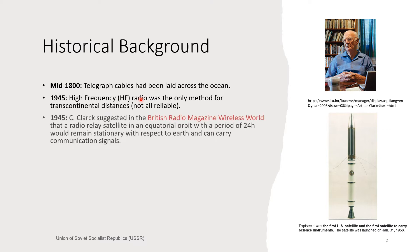Also in 1945, a writer called Arthur C. Clarke — his picture is shown here — suggested in the Wireless World radio magazine that it would be possible to make a radio relay satellite in an equatorial orbit with a period of 24 hours, remaining stationary with respect to the Earth and capable of carrying communication signals.